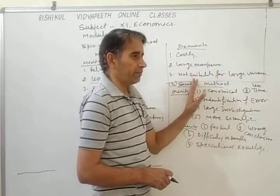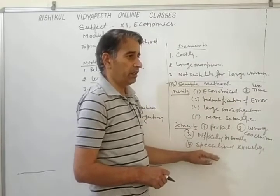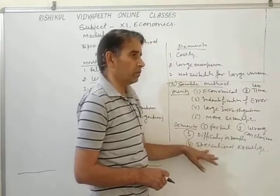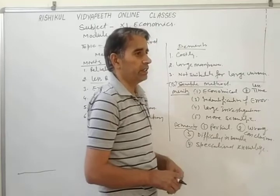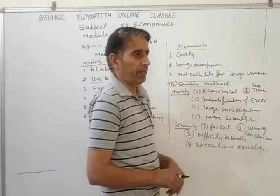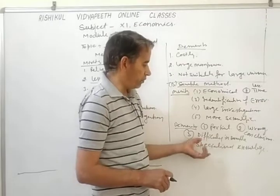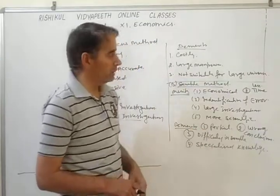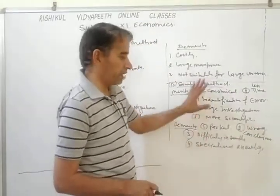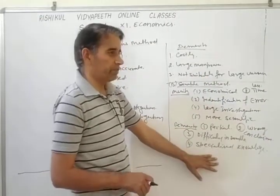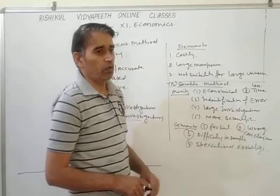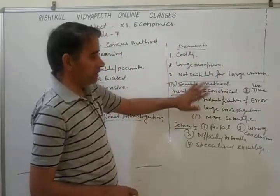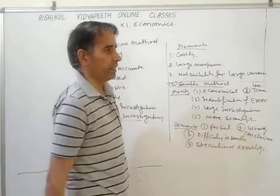Last demerit is specialized knowledge. Under the sample method, a common person cannot use this method because to select particular items and make the analysis, more knowledge of methods and techniques is needed. Only specialized persons can use such methods or techniques. So this method can be used only by specialist persons, not by a common person.